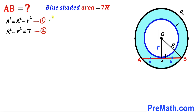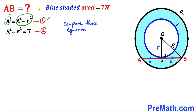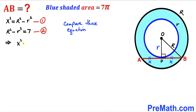Now we compare our two equations. From Equation 1 we have x² = R² − r², and from Equation 2 we have R² − r² = 7. Therefore x² = 7. Taking the square root of both sides, the square and square root undo each other, so x = √7.